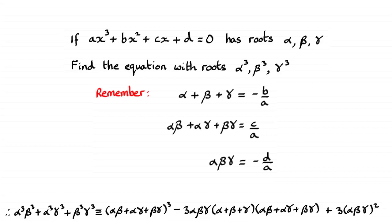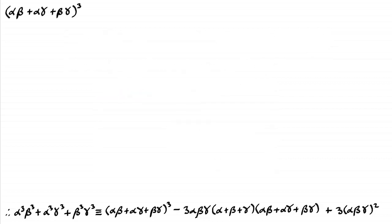So here we go. What I'm going to do is take the sum of the pairs of the products of roots — alpha beta, plus alpha gamma, plus beta gamma — and cube all of this result. So it's just going to mean writing this out as three brackets first of all.